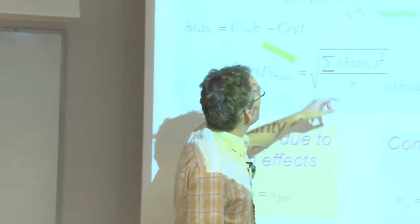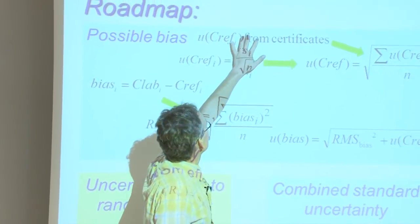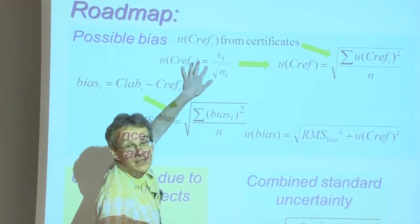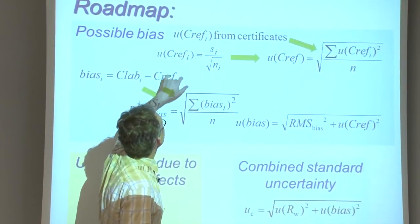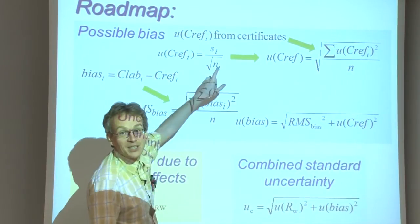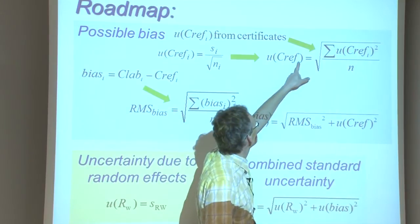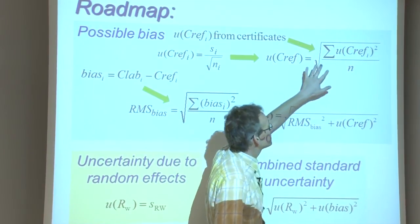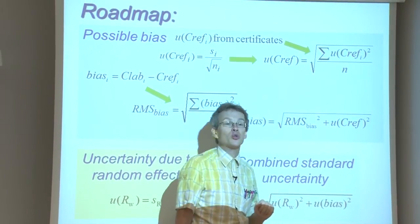Secondly, either from the certificates or from interlaboratory comparison data, we find the uncertainties of those reference values, and these are in turn averaged into the UC ref using again this root-mean-square approach.